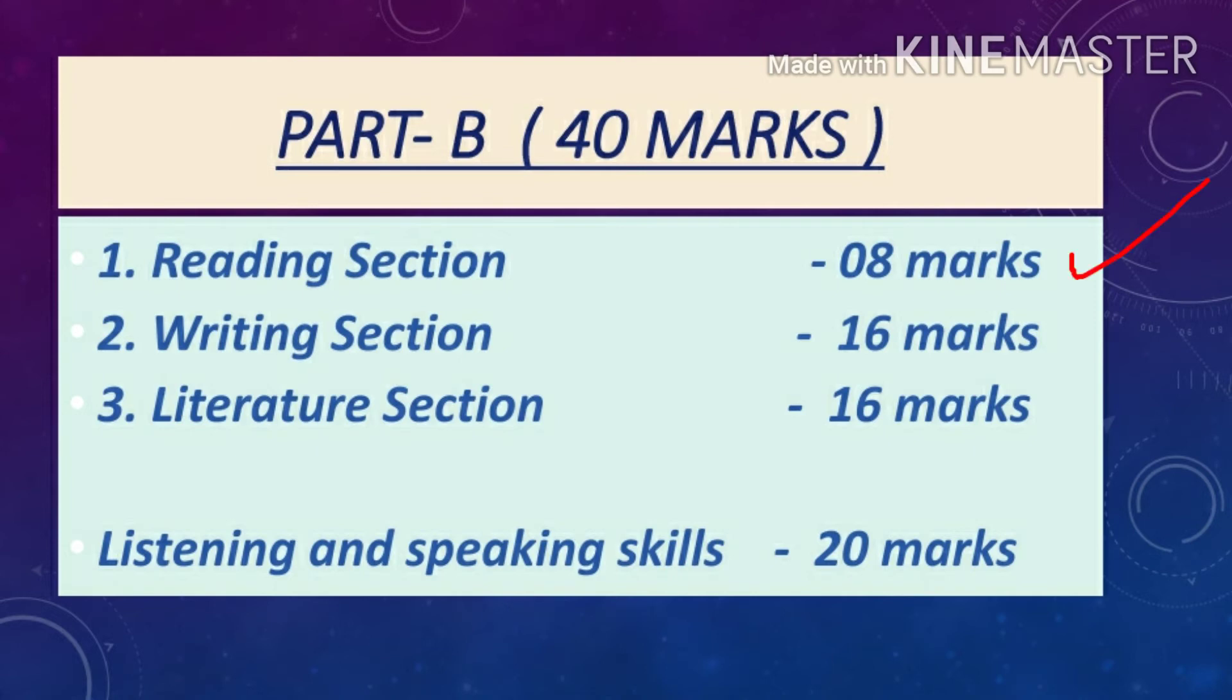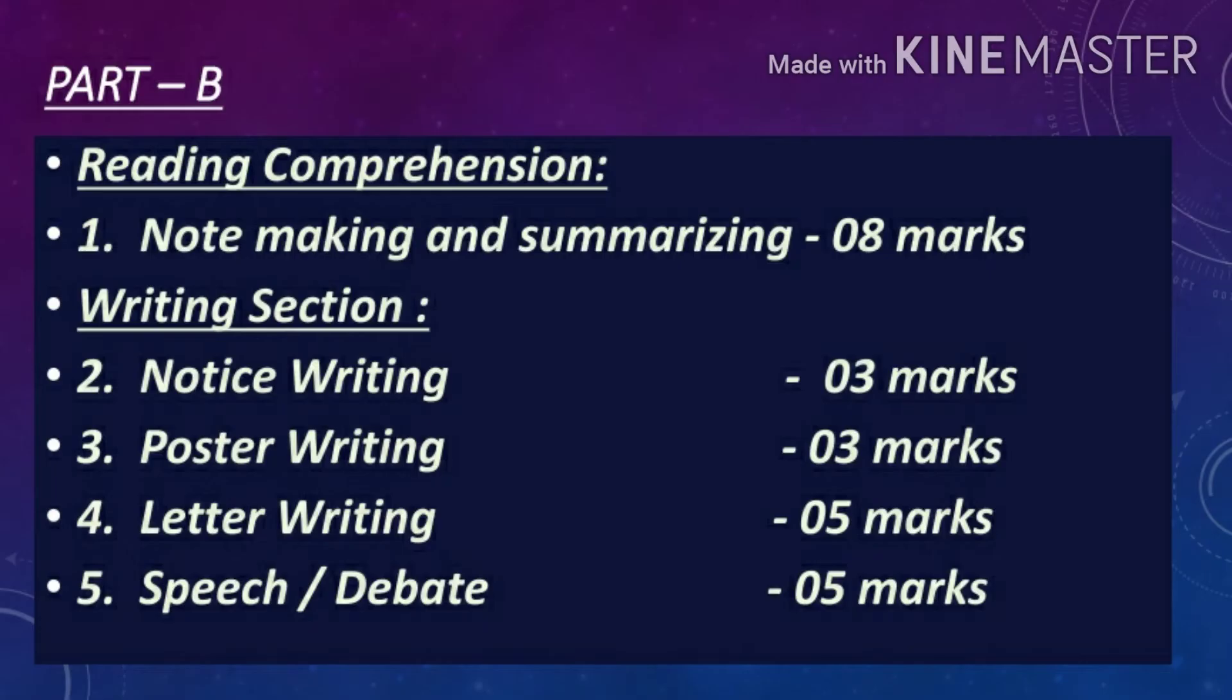Now let's talk about Part B. Part B also carries 40 marks, which is first reading section that carries 8 marks, then writing section that carries 16 marks, then literature section that carries 16 marks. Apart from Part A and Part B, there will be listening and speaking skills that carries 20 marks. Basically your paper will be 80 marks and 20 marks will be conducted by your school for listening and speaking skills.